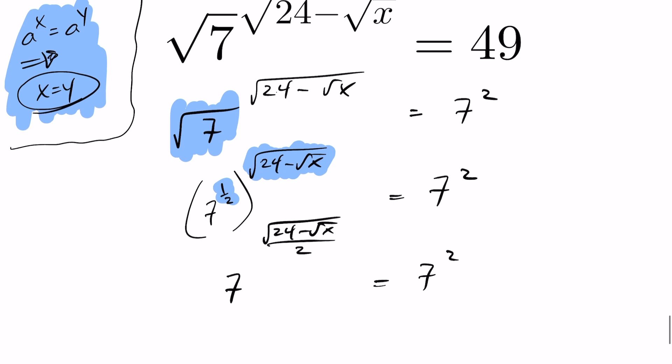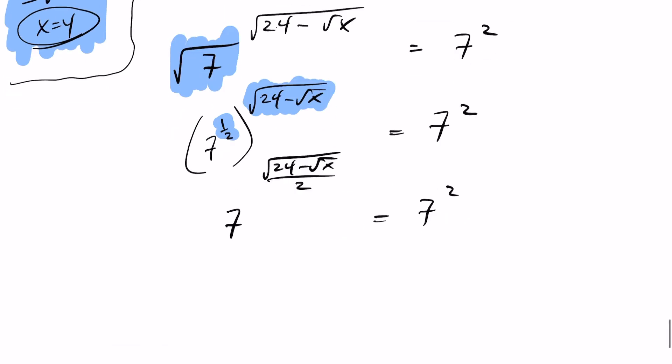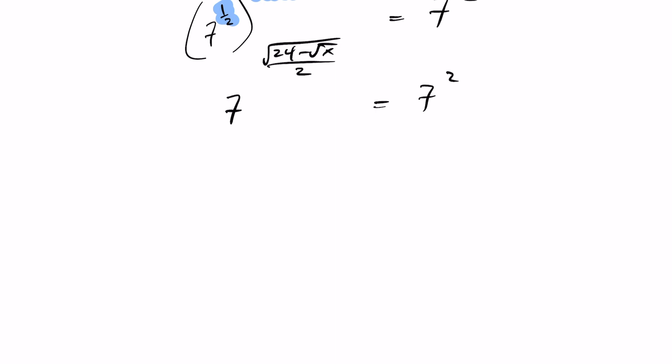Now you can see I've achieved the goal I was outlining. The bases are now both 7s and they're both raised to a single exponent. In which case, these must be equal, right?